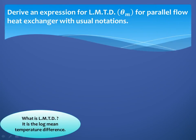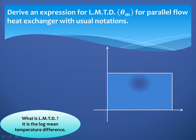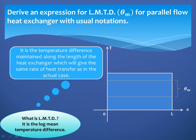Let us start to understand what is the meaning of LMTD. LMTD is nothing but the Log Mean Temperature Difference, and we'll derive the equation for the same. It is a temperature difference maintained around the length of the heat exchanger which will give the same rate of heat transfer as in the actual case.